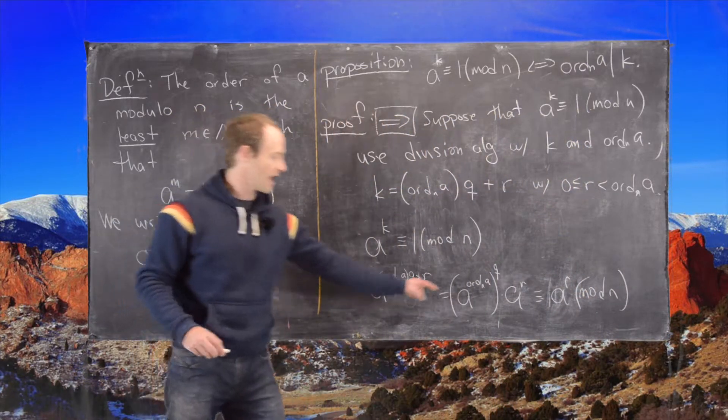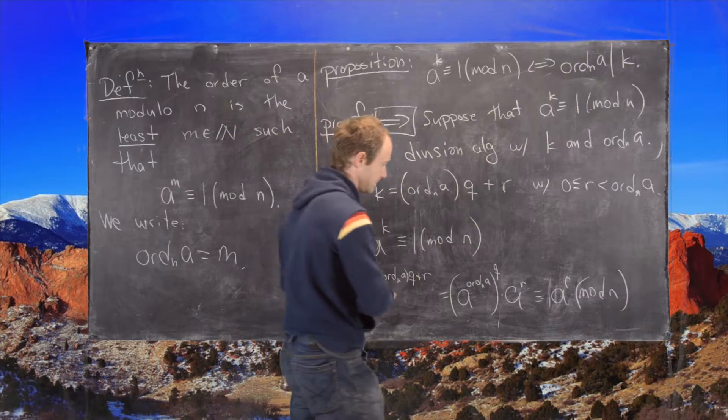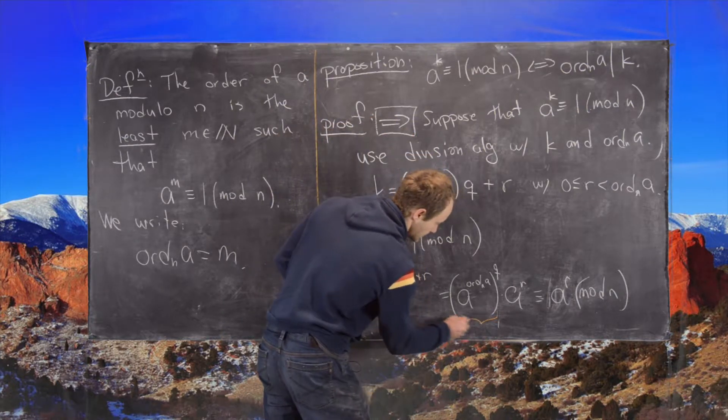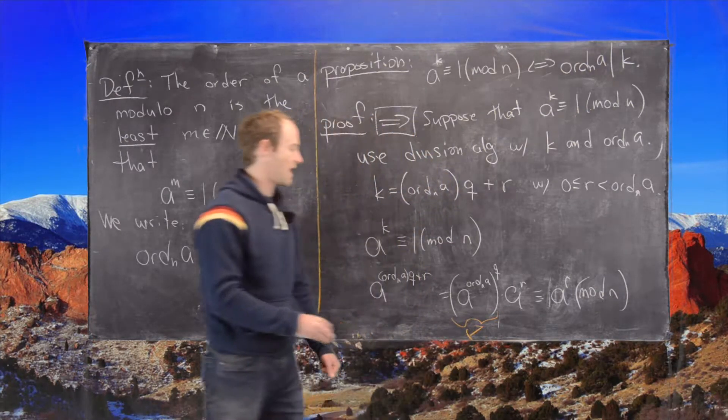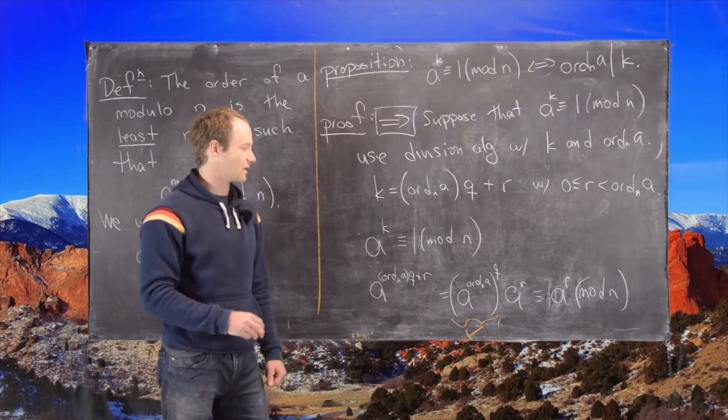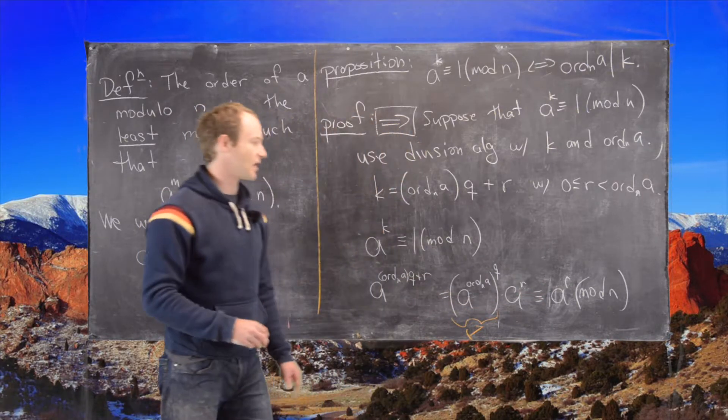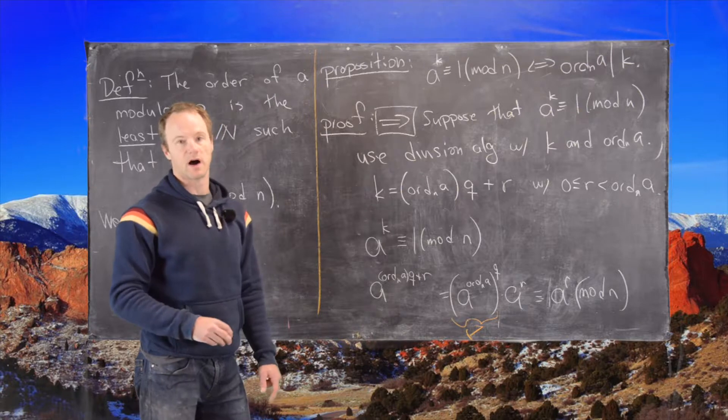Okay. So let's see what we've got. We know that this bit is congruent to 1 mod n because we've raised a to the order. And so that tells us that a to the r is congruent to 1 mod n.